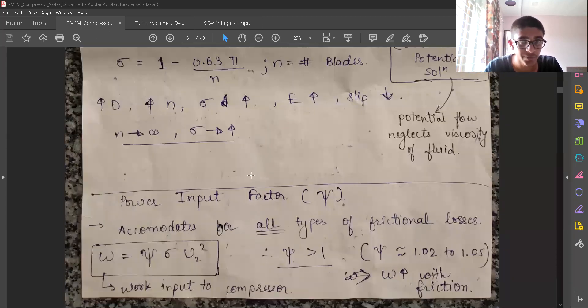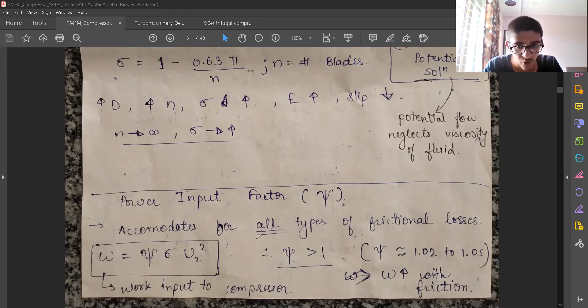The third factor which comes into picture is power input factor, that is described by psi. It accommodates for all types of frictional losses. Whatever actual fluid which is viscous fluid, there are all different types of losses which are happening. All the frictional losses are accommodated in this power input factor psi. Actually we have to input more power for same amount of velocity, so obviously the power input factor psi is going to be larger than 1. The work input to compressor, that is the actual work input to compressor is going to be finally psi sigma u2 squared. We can figure out that the work done or the energy transfer to fluid is the factor of some configurations of my system and the blade velocity.